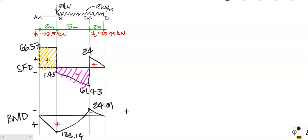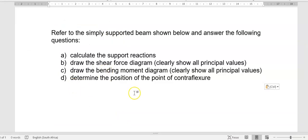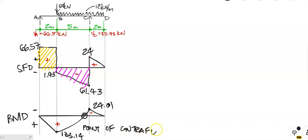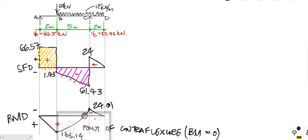Let's go to the last part of the question: determine the position of the point of contraflexure. Let me explain what that is. This is the bending moment diagram. Notice it starts at zero, goes down, turns, and goes back up. That position there — where the bending moment crosses back through zero — is the point of contraflexure.